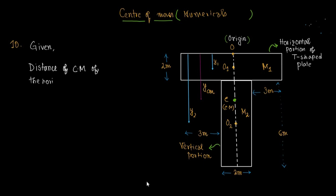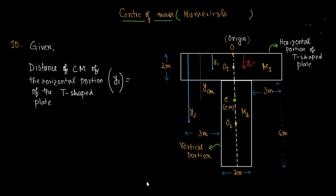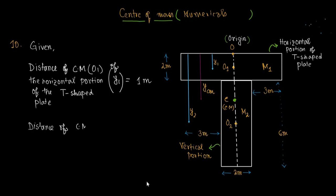The distance of center of mass O1 of the horizontal portion from the origin O is y1. Since the height of the horizontal portion is 2 meters, the center of mass O1 is at half that height. Therefore y1 is equal to 1 meter.